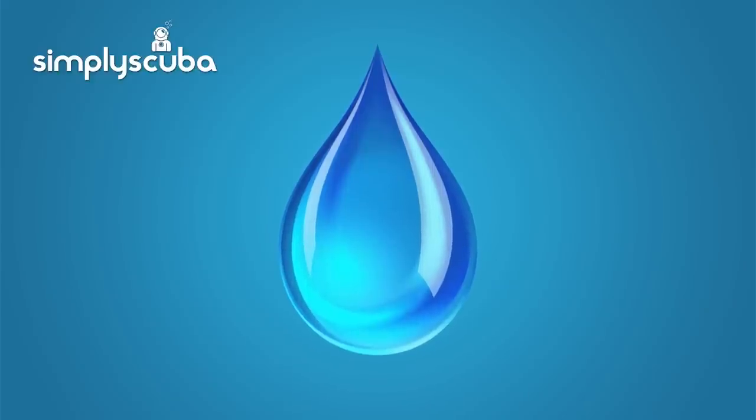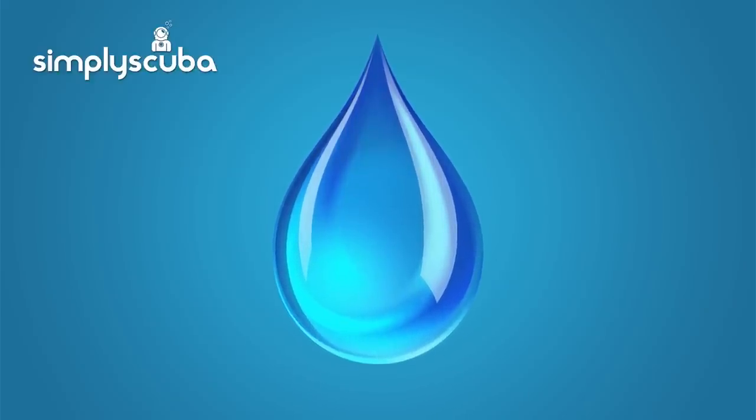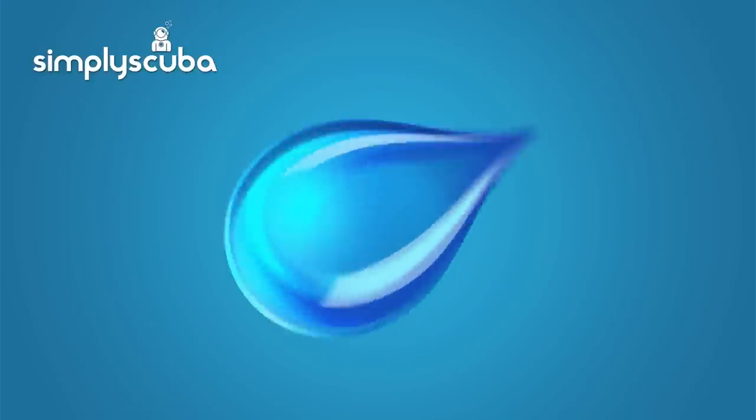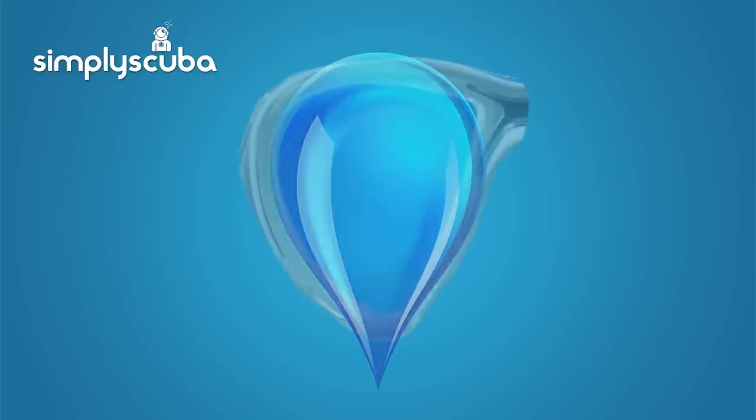The shape of the lens is also important. Most manufacturers have adopted a reverse drop shape. Now if you imagine a water droplet running down a window it has a curved bottom and a tip at the point. Rotate that 180 degrees now look at the majority of masks available and you'll see that shape in the lens. This particular shape works well when used with a raked frame to offer excellent field of view to both the side lower sectors and make the frame itself seem almost invisible.